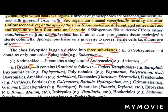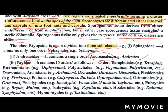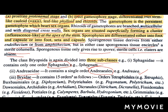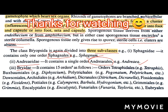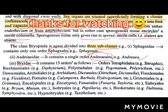The third subclass is Bryidae; it contains 15 orders such as Tetraphidales, Buxbomiales, Polytrichales, Dawsoniales, Dicranales, Pottiales, Grimmiales, Encalyptiales, Funariales, Eubryales, Isobryales, Hookeriales, Hypnobryales, etc.